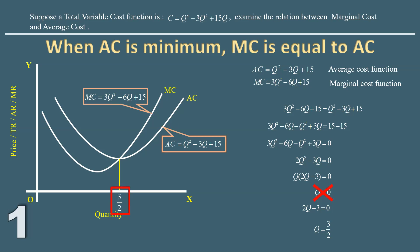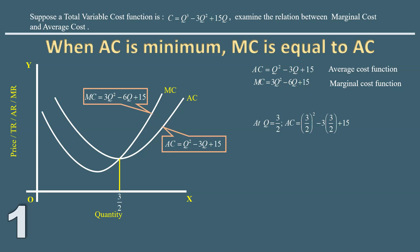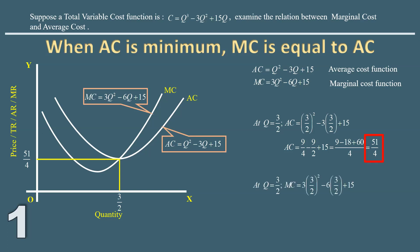We are interested in the values of average cost and marginal cost at this point. Plugging q = 3/2 into the average cost function gives average cost = 51/4. Plugging q = 3/2 into the marginal cost function also gives marginal cost = 51/4. Marginal cost equals average cost when average cost is minimum. The first relation is confirmed.